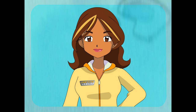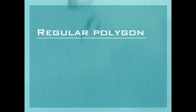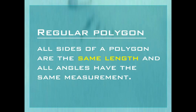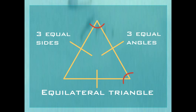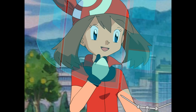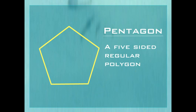Right! They're regular polygons. Regular means that all their sides are the same length and their angles all have the same measurement. Like this equilateral triangle — equilateral triangles have three sides of equal length and three angles of equal measurement. How about this regular polygon? How many sides does this have? Five! A five-sided regular polygon is called a pentagon.